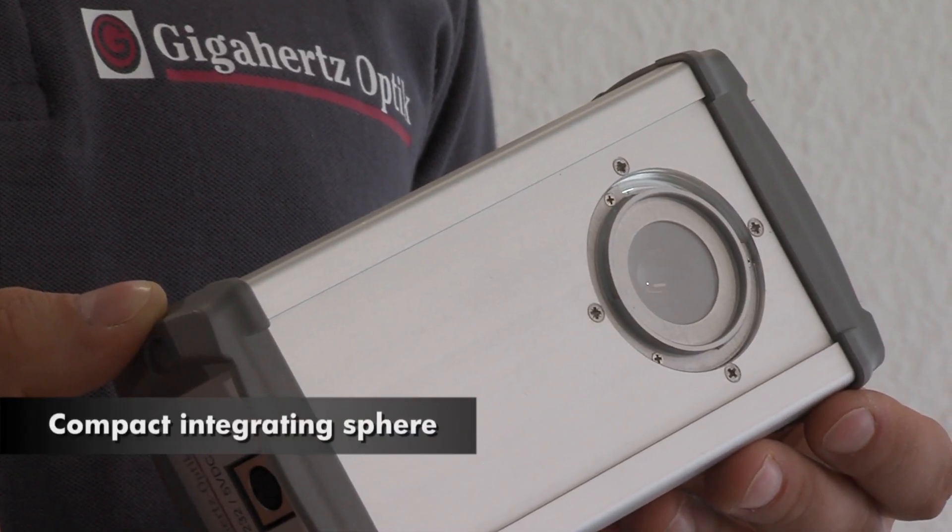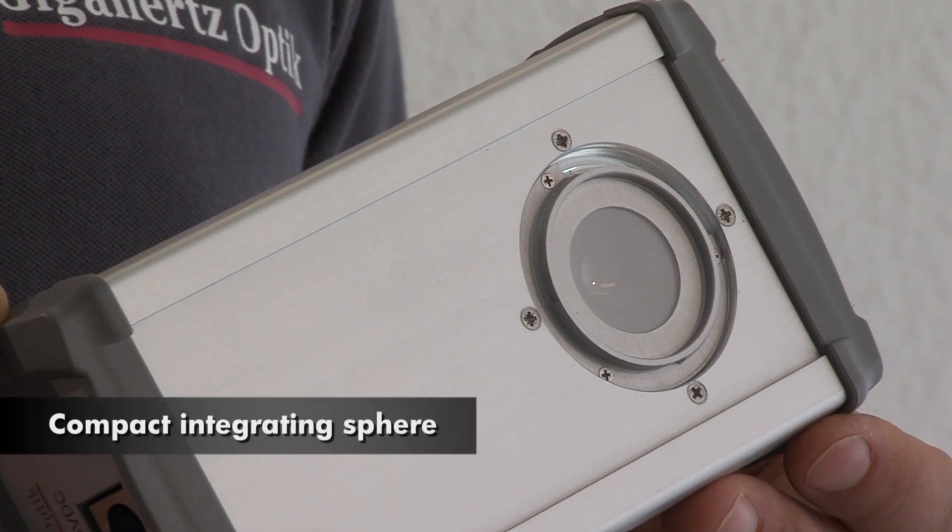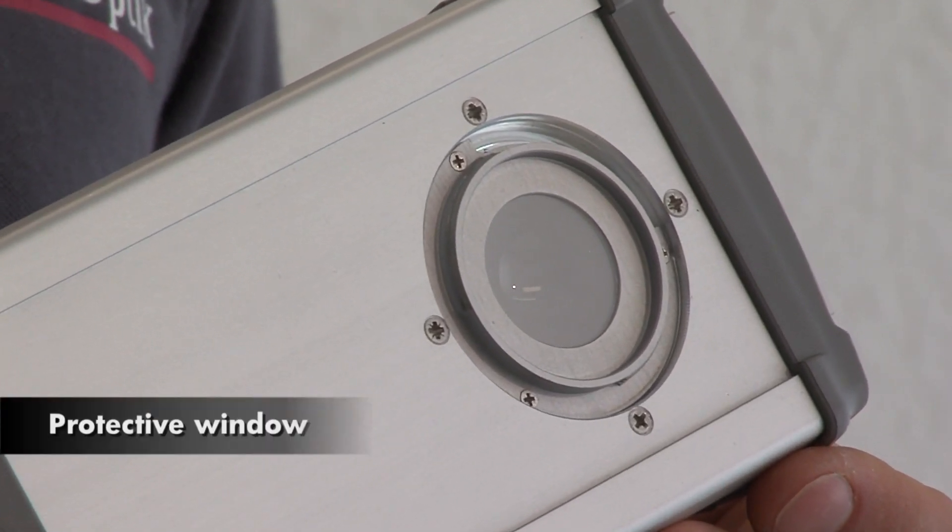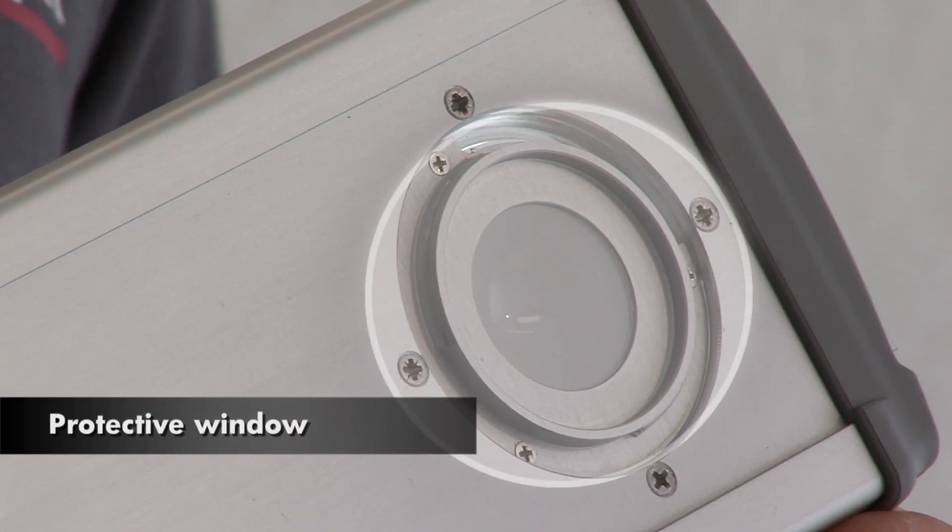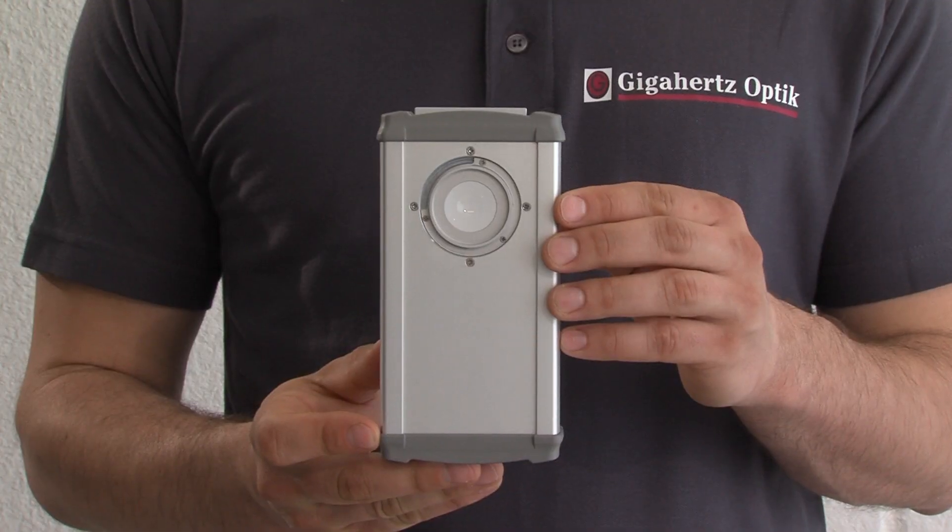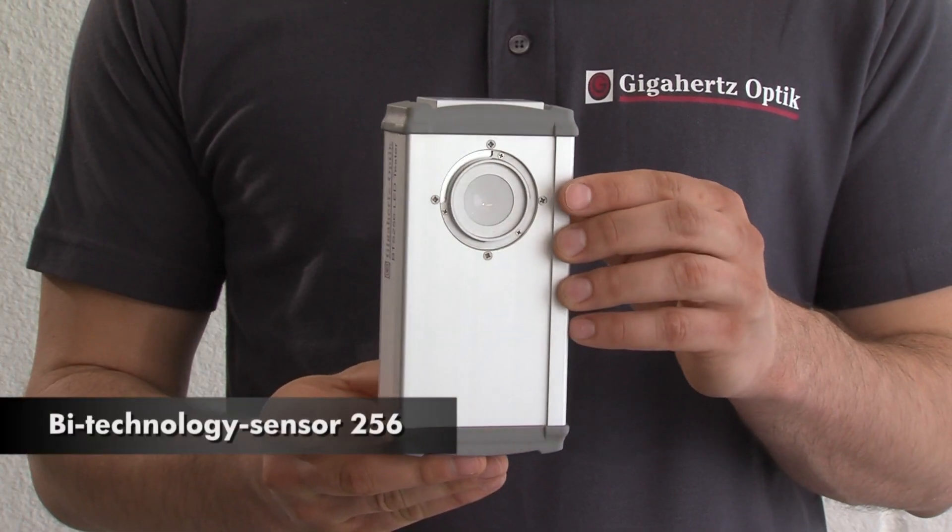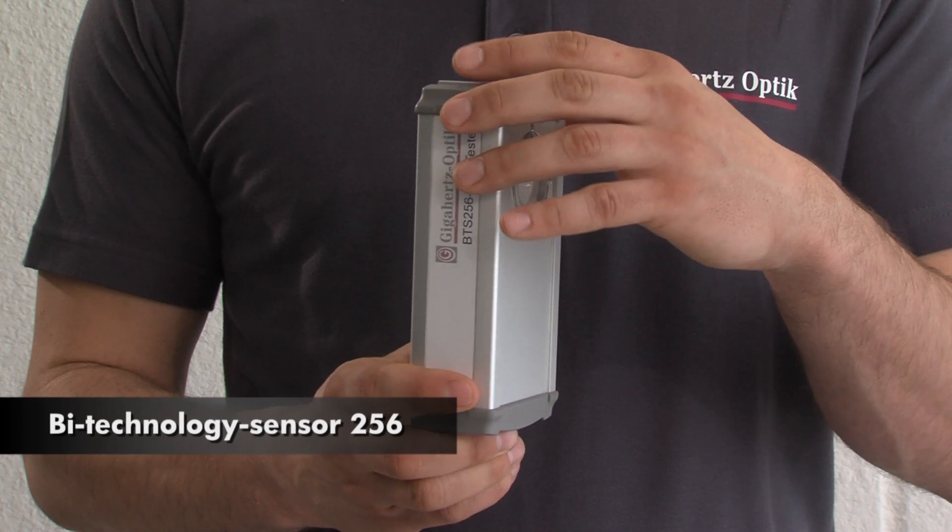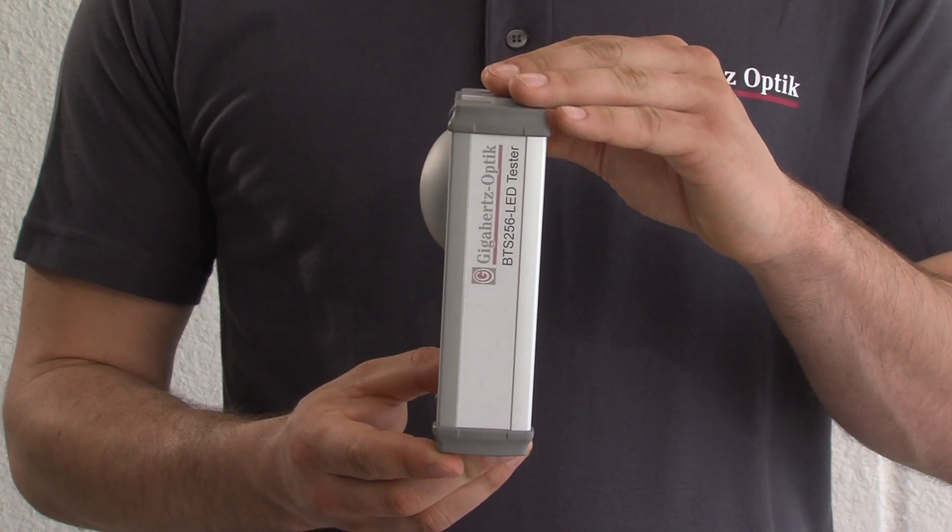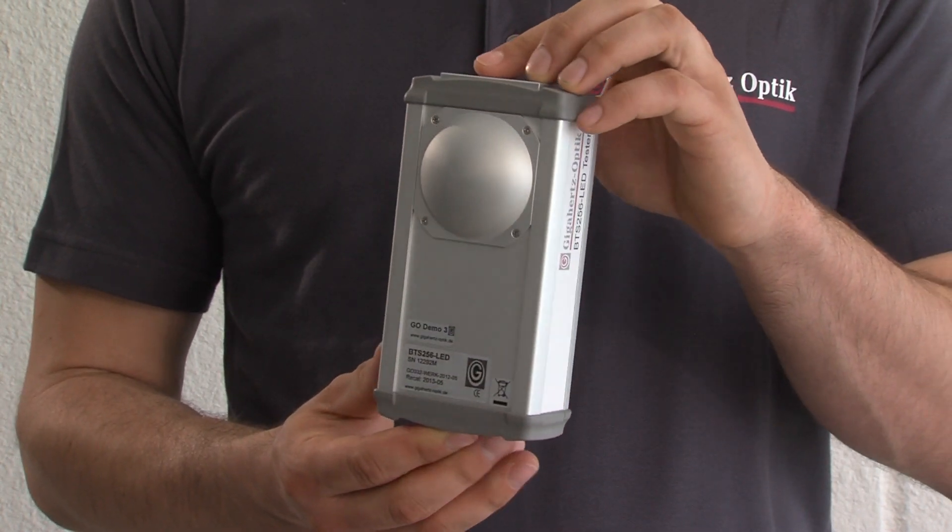Key features include a compact integrating sphere made from the synthetic material Optima with a protective window. Gigahertz Optics Technology Sensor 256 combines a photometrically corrected photodiode and diode array detectors for increased accuracy.